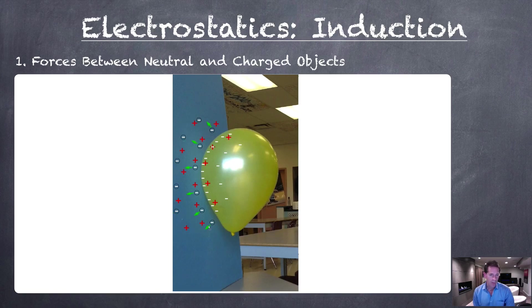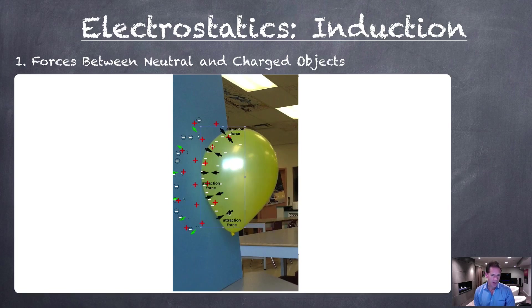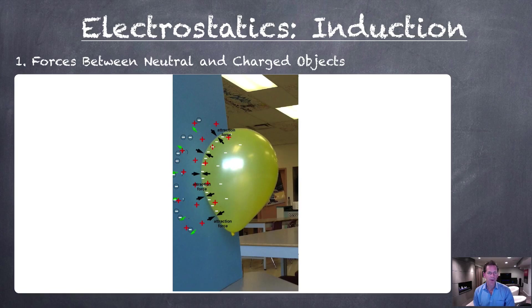The excess negative charges on the balloon would have a repulsive effect on the negative charges in the wall. Although they couldn't move very much, they would move further away from the balloon. The diagram is not to scale, but it illustrates the idea. That repulsive force from the negative charges on the balloon would continue to hold the negative charges in the wall at bay, leaving the wall near the balloon with a positive charge. The wall is still neutral overall, however — the balloon is the only charged object. That means there would be an attractive force between the excess negative charges on the balloon and the induced positive charge on the wall.